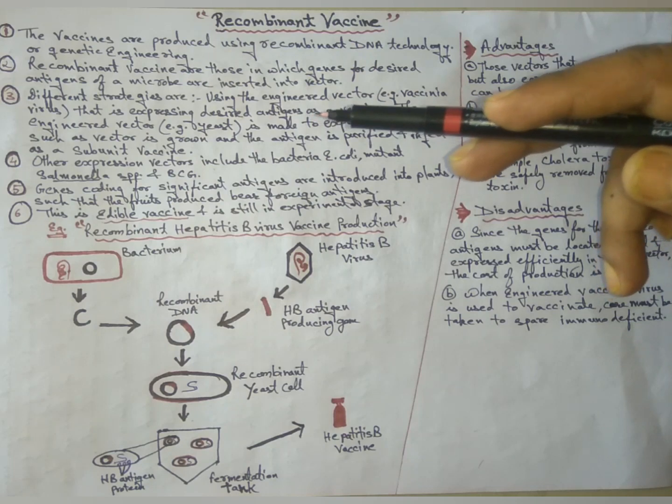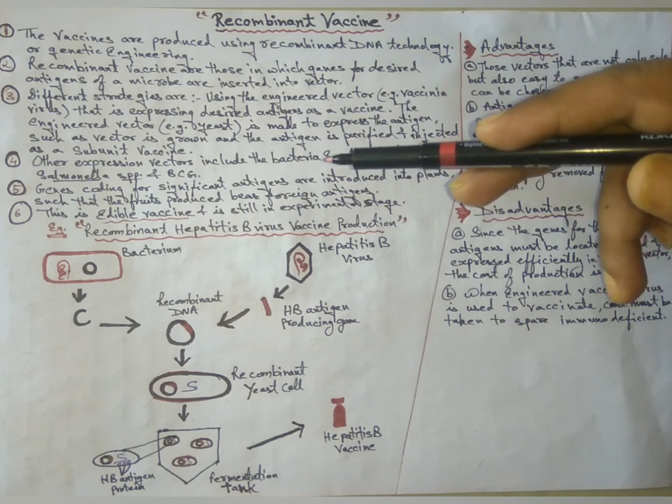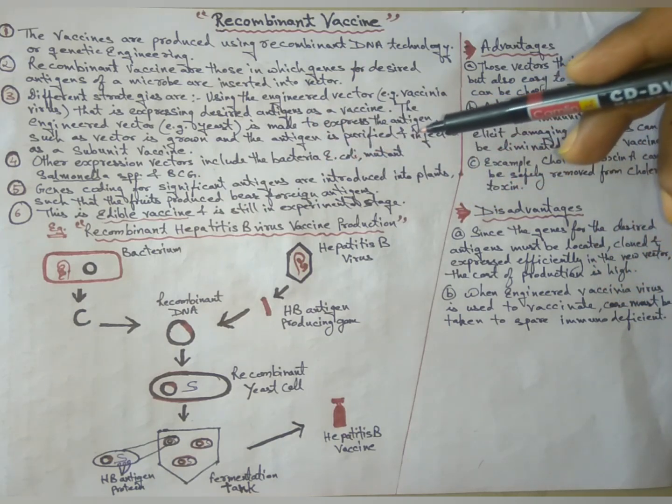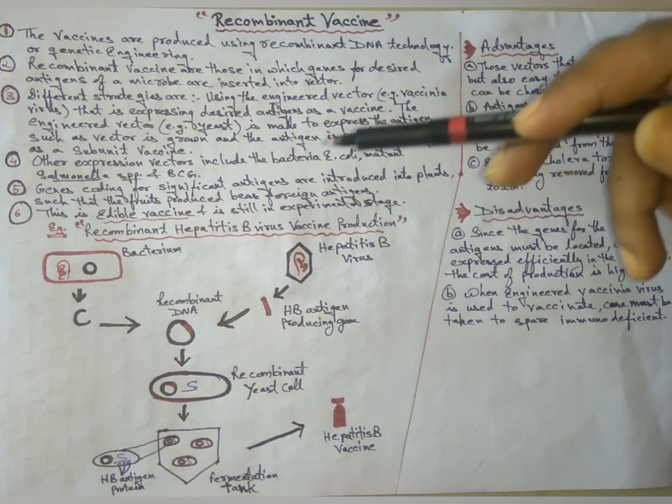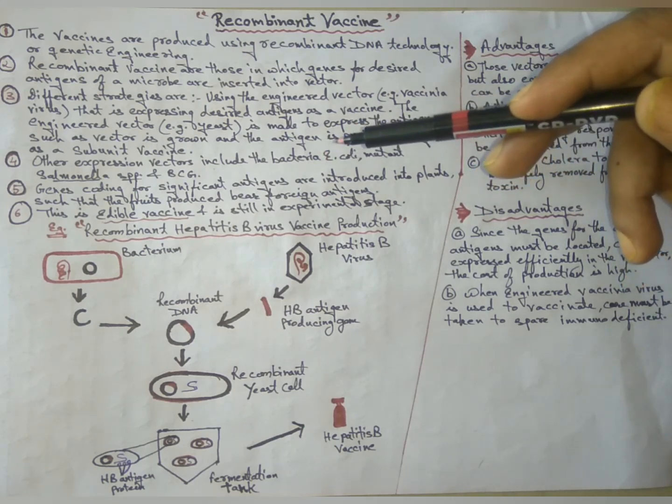Other expression vectors include the bacteria E. coli, mutants, Salmonella species, and BCG.